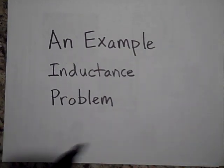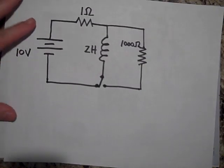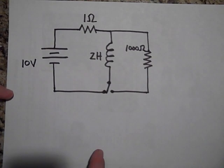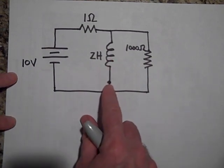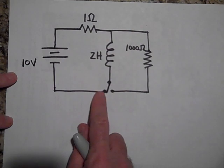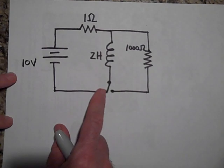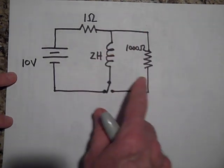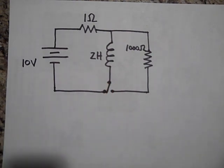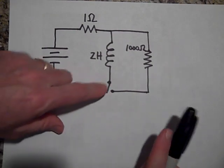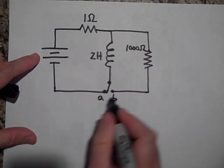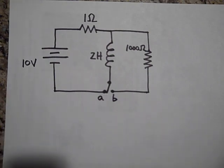Here's a typical inductance problem. We have a 10-volt battery, a 1-ohm resistor, and a 2-Henry inductor. We'll start with the switch not connected — we touch it to position A and let the current build up, then at some point we move it to position B so the circuit loops around there. Let's call these positions A and B. The first thing I'm going to do is switch it to A.